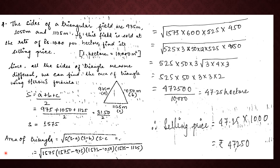Next we have a triangular field whose sides are 975 metres, 1050 metres, and 1125 metres. This field is sold at the rate of 1000 per hectare; find its selling price. We are told that one hectare equals 10,000 square metres. Since all three sides are different, we use Heron's formula. The semi-perimeter is found by adding all three sides and dividing by two, giving 1575. Solving the area formula gives 47.25 hectares.